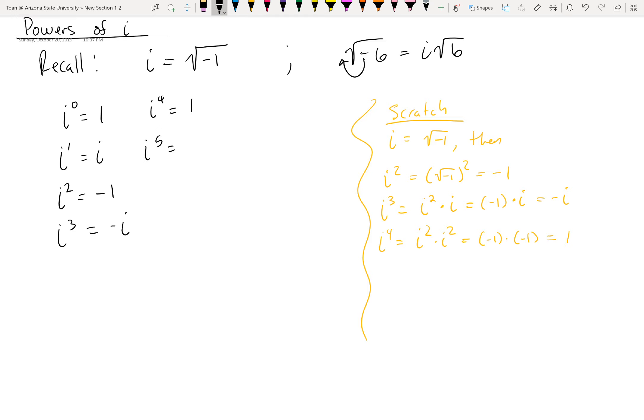What about I to the fifth power? I to the fifth power. Let's go back to our scratch work. Let's be clever again. I'm going to sort of cheat. It's not very clever. I to the fifth is just I to the fourth times I. And we've already said I to the fourth was 1. So this is I again.